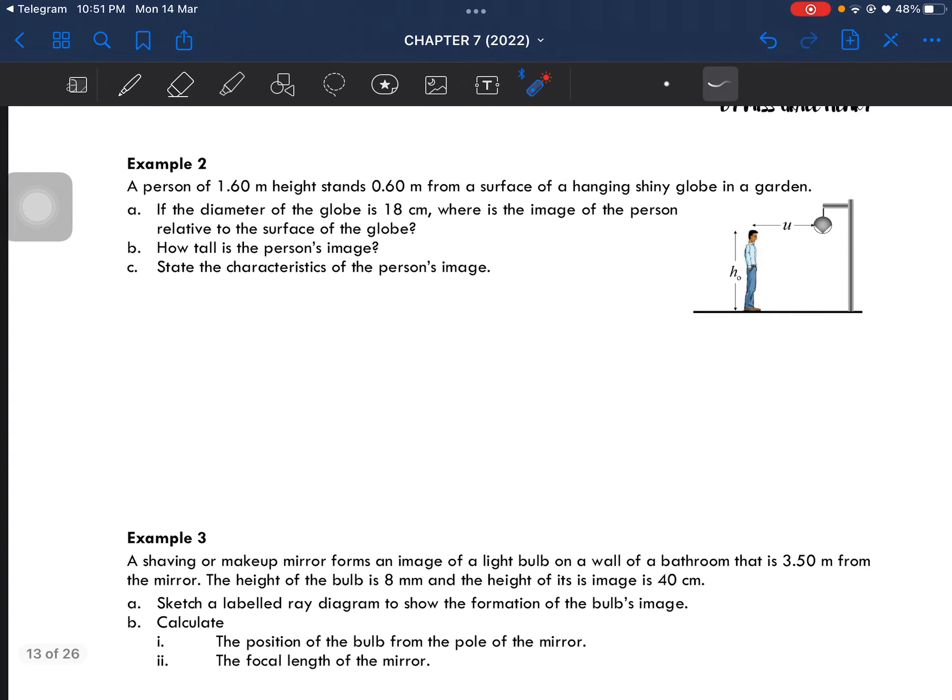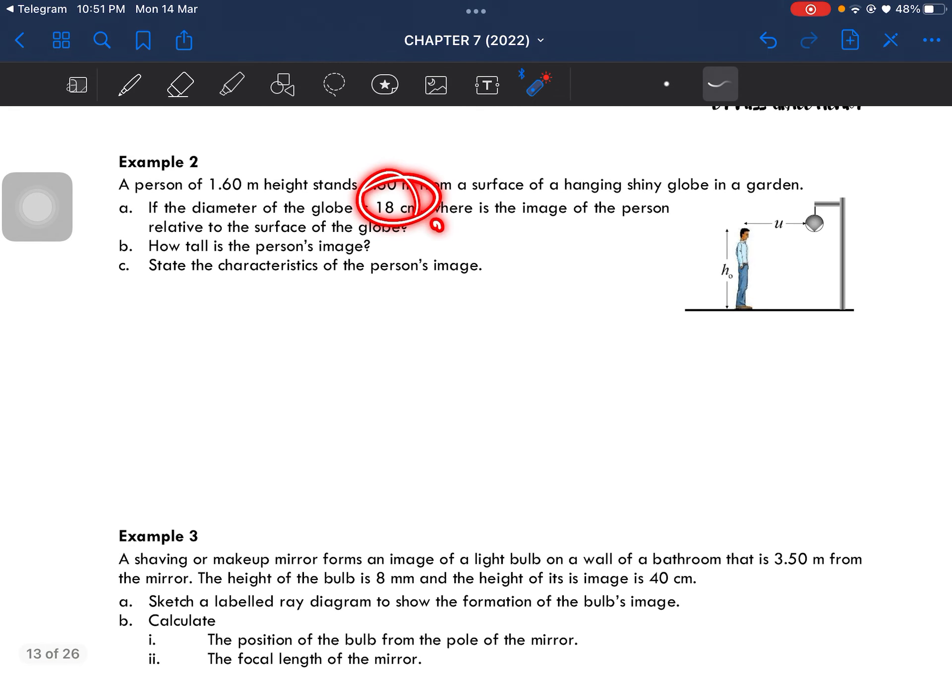If the diameter of the globe is 18 centimeter, where is the image of the person relative to the surface of the globe? And how tall is the person's image? That's the characteristics of the person's image.